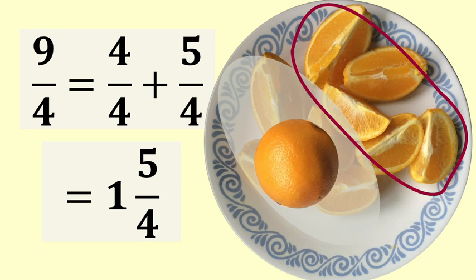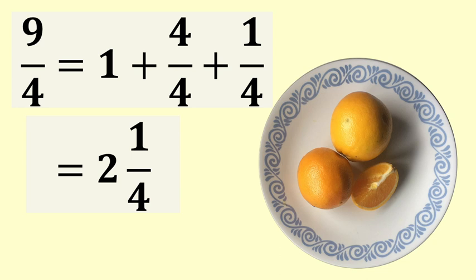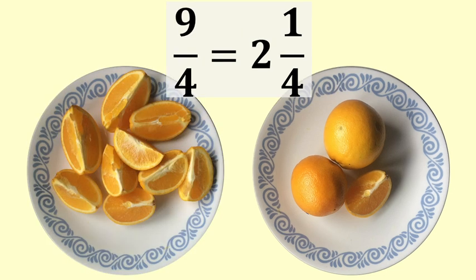But the five is still greater than the four, so we need to extract another whole orange out of the fraction. So the nine quarters is one plus four quarters plus one quarter. So that becomes one whole orange plus one whole orange plus one quarter, which is equal to two and one quarter. So the nine quarters is equal to two and one quarter.